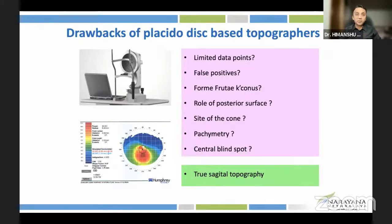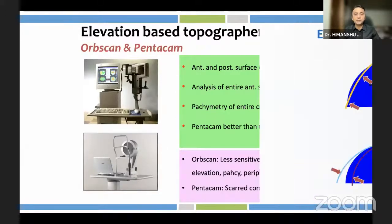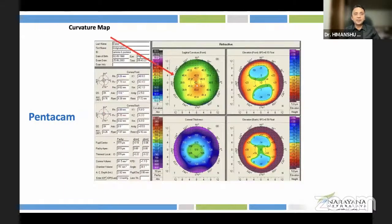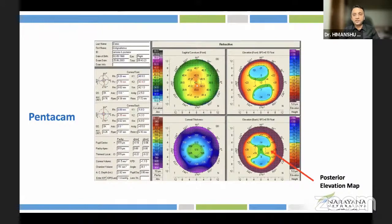The Placido-based topographer gives topography from the first Purkinje image or the tear film, but does not give data from the posterior surface and the entire corneal thickness. Elevation-based topographers can give the entire anterior segment topography, which is much more accurate. Elevation-based topographic patterns are usually two: the island pattern and the saddle pattern. An island pattern — a mountain in the center — is typical of keratoconus. On a Pentacam map, the first map is curvature, the second is anterior elevation, the third is posterior elevation, and the fourth is the pachymetric map.